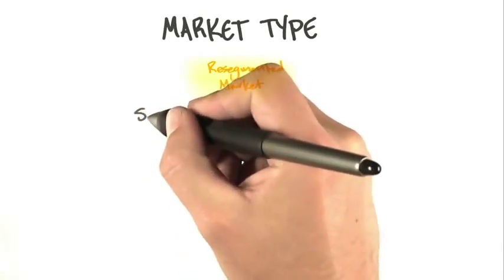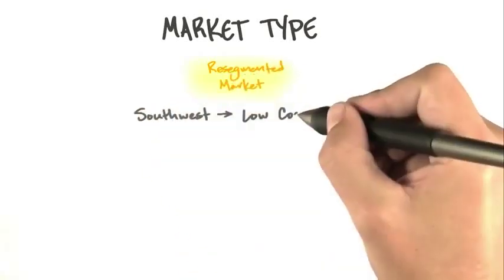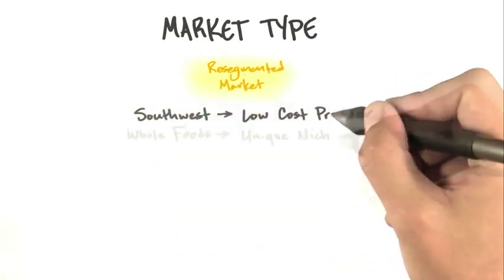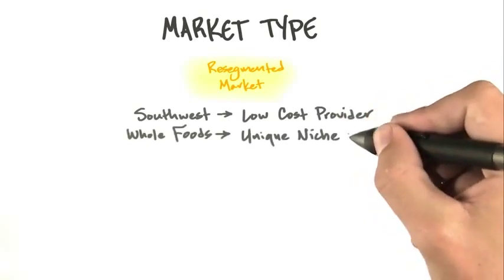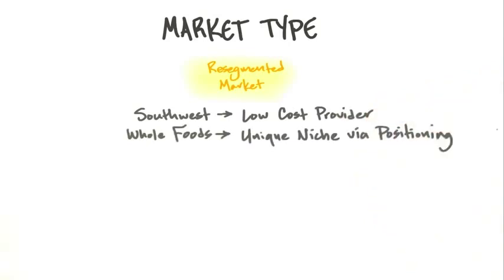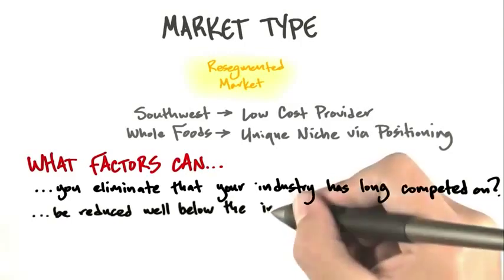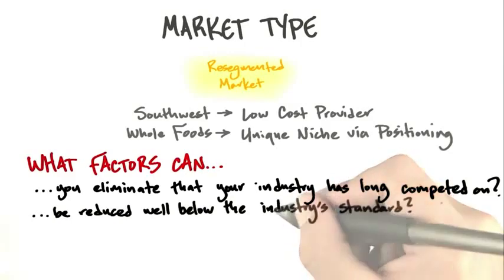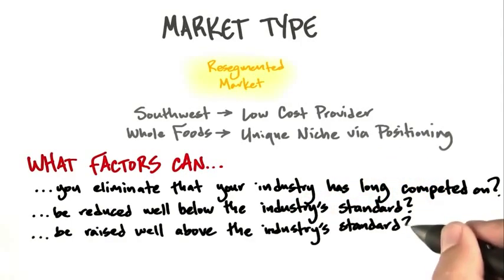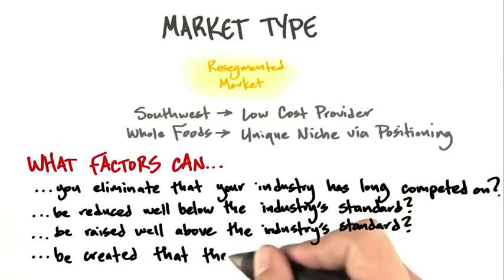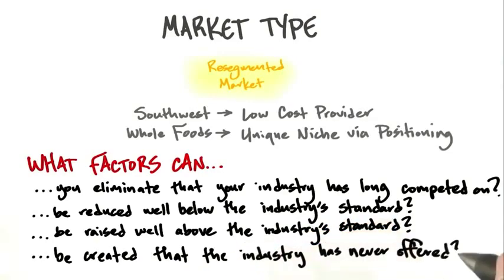In a resegmented market — using Southwest as a low-cost entrant or Whole Foods as a unique niche supplier via positioning — what you really want to start asking is: what factors can you eliminate that your industry has long competed on? What can you reduce below the industry standard, or raise above it? Or what can be created that the industry has never offered?